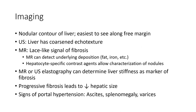Imaging: nodular contour of the liver is easiest to see along the peripheral margin. On ultrasound, the liver has a coarse echotexture. MRI shows lace-like signal of fibrosis. MRI can detect underlying deposits such as fat, iron, etc. Hepatocyte-specific contrast agent allows characterization of nodules. MRI or ultrasound elastography can determine liver stiffness as a marker of fibrosis. Progressive fibrosis leads to decreased hepatic function.